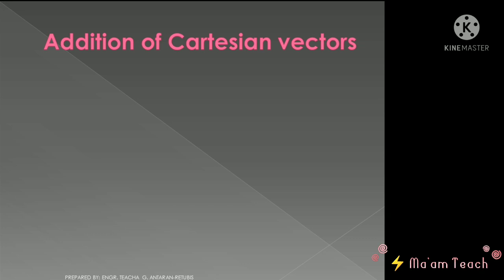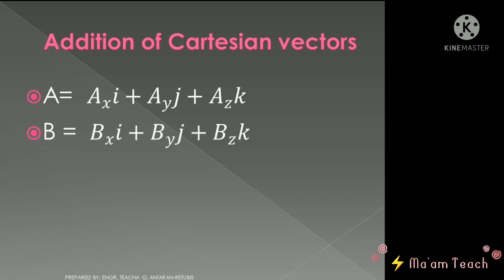So how are we going to add Cartesian vectors? Let's say class we have given here vector A and a vector B. As you can see, the vectors are expressed in Cartesian vector notation with x component, y component, and z component as well as their unit vectors i, j, and k.